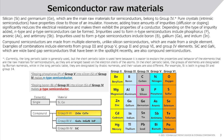Semiconductor Raw Materials. Silicon and germanium, the main raw materials for semiconductors, belong to Group 4. Pure crystals (intrinsic semiconductors) have properties close to those of an insulator. However, adding trace amounts of impurities (diffusion or doping) significantly reduces electrical resistance and makes them exhibit conductor properties. Depending on the type of impurity added, n-type and p-type semiconductors can be formed.